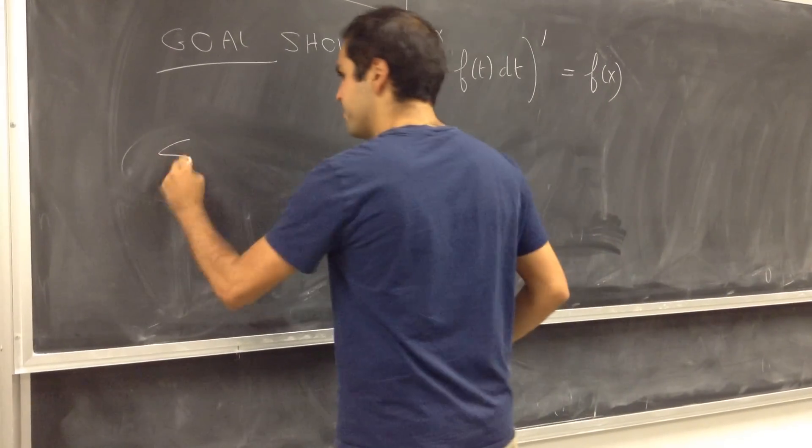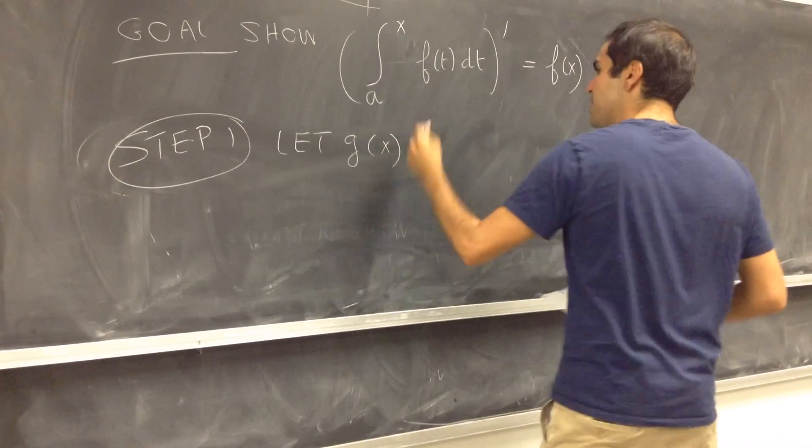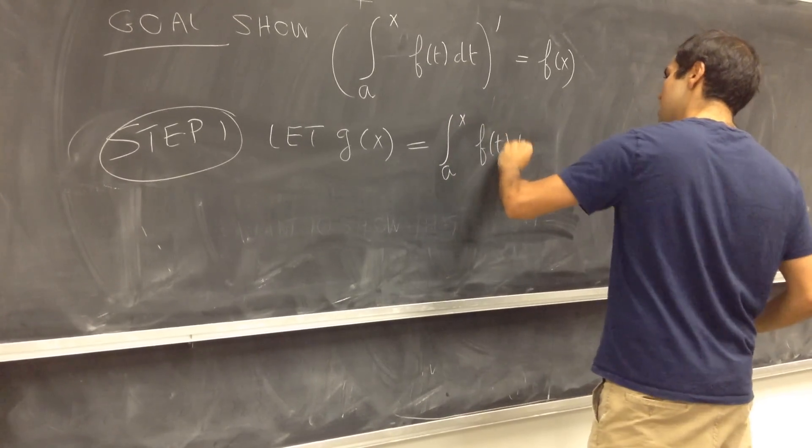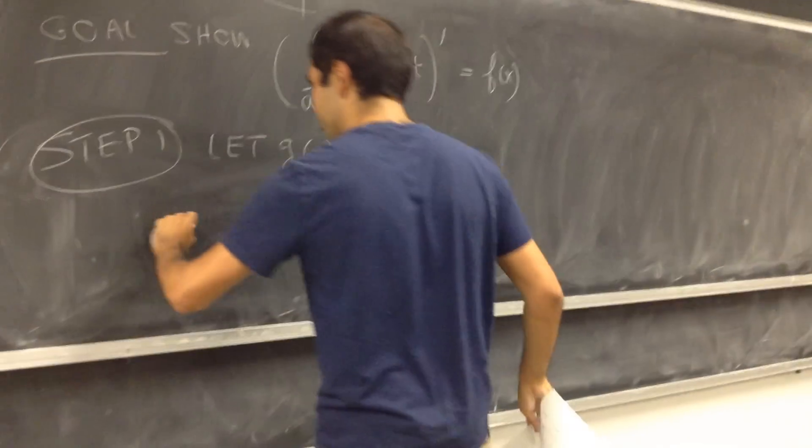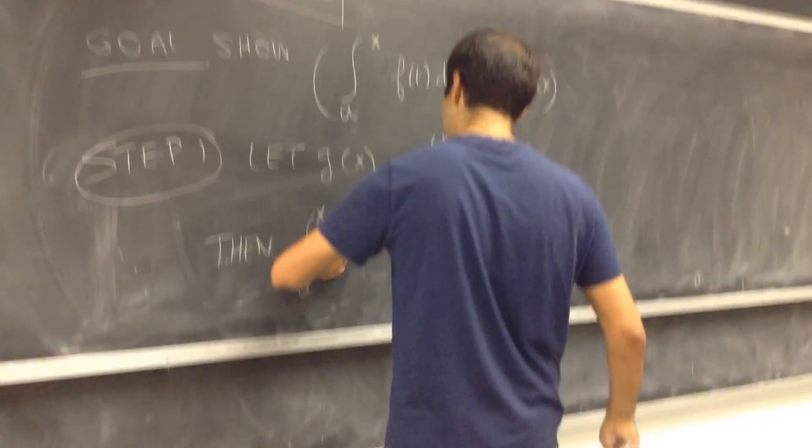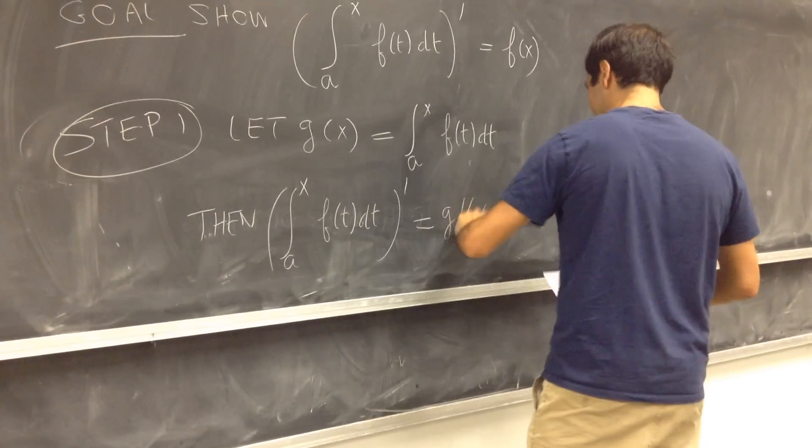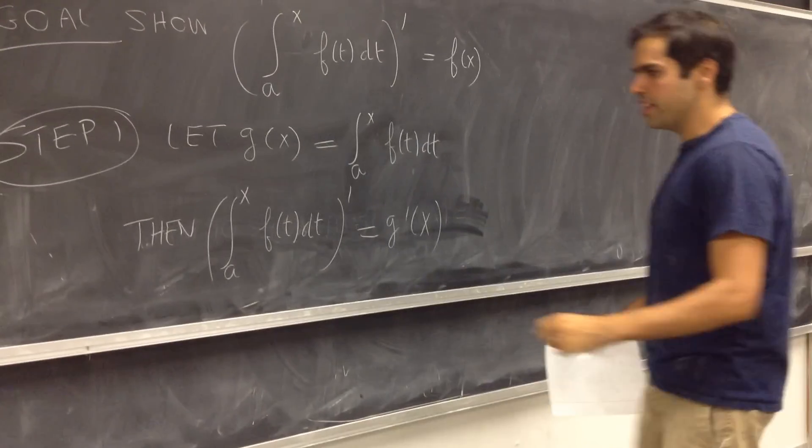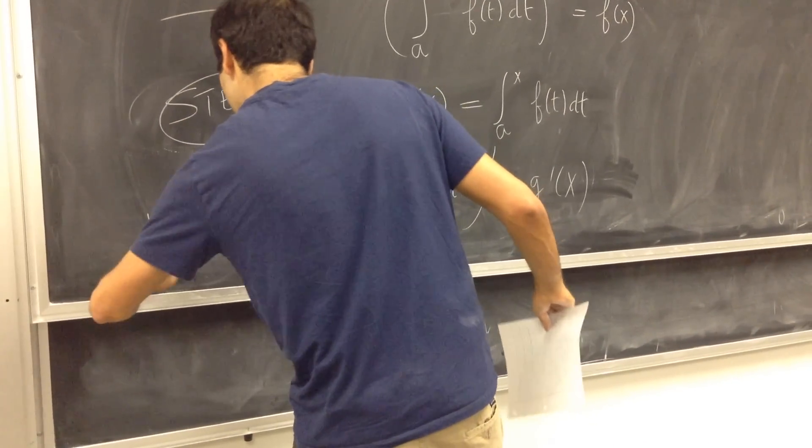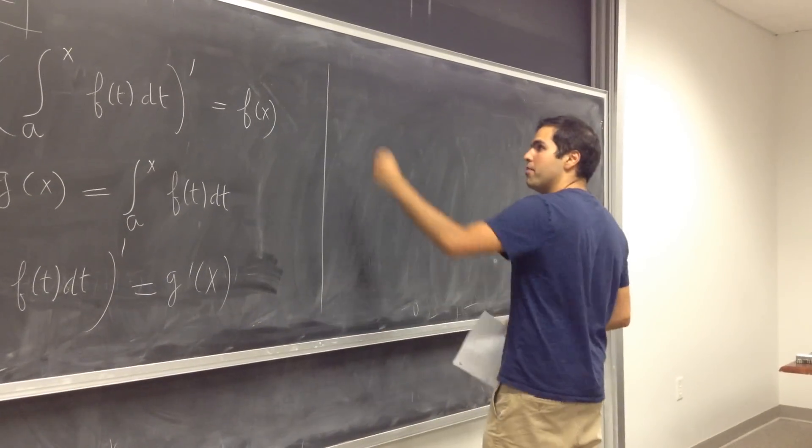So first of all, let's call this a name. Let g of x be equal to integral from a to x, f of t dt. Then that derivative from a to x, f of t dt, all that this is, is g prime of x. And we want to show that this is f of x.